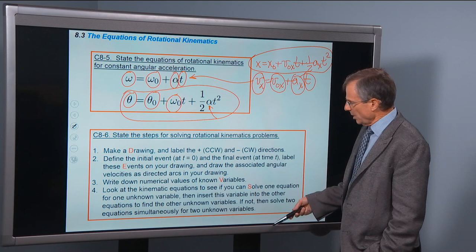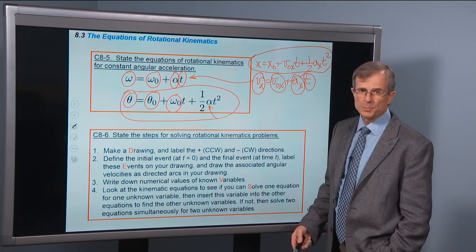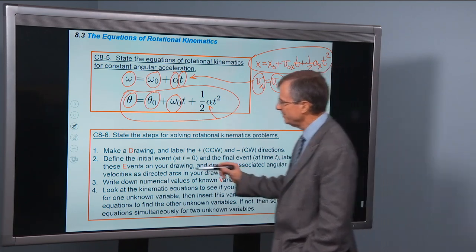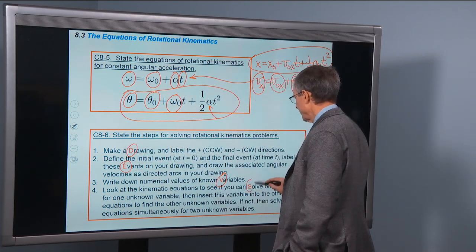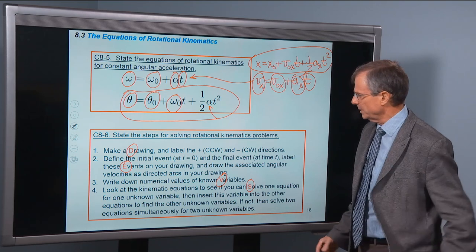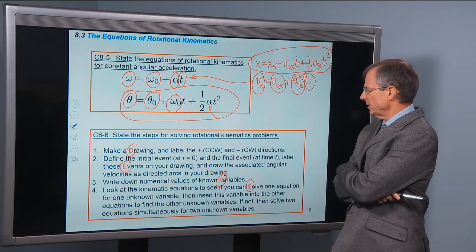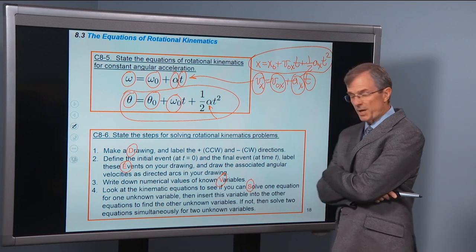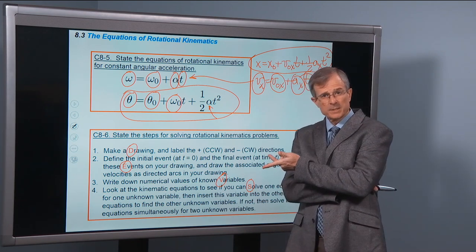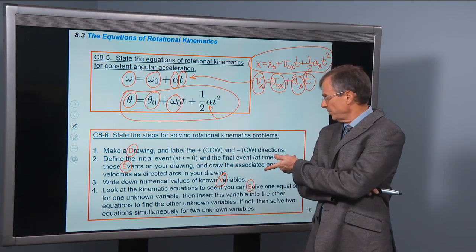To solve rotational kinematics problems, we're going to use the same steps, DEVS, essentially the same steps that we did with kinematic equations. Make a drawing and label the plus and minus directions. The positive direction is counterclockwise, the negative direction is clockwise.